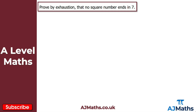Looking at proof by exhaustion, we have this question: prove by exhaustion that no square number ends in seven. For proof by exhaustion, the clue is in the name — we simply exhaust all possible cases. We want to show no square number ends in seven, but listing all square numbers is impossible since there are infinitely many, so we need a different approach.